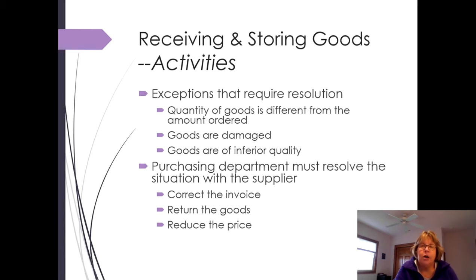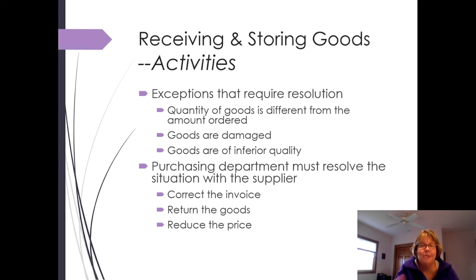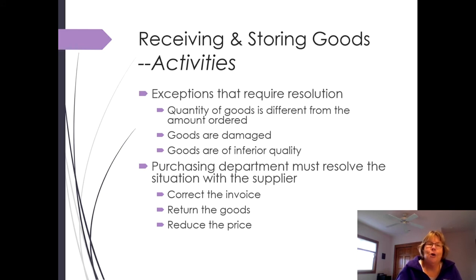There can be things that are wrong, and it's not receiving's job to resolve these — they need to send them to purchasing. For example, the quantity could be off: we ordered 10, we received 9. Hopefully the invoice also shows 9, but we want to flag this as an exception to make sure we only get charged for 9. Goods could also be damaged or of poor quality — for example, receiving red parts at John Deere would be poor quality that needed to be sent back. The purchasing department must then resolve the situation: they could correct the invoice, return the goods, or get a deduction.